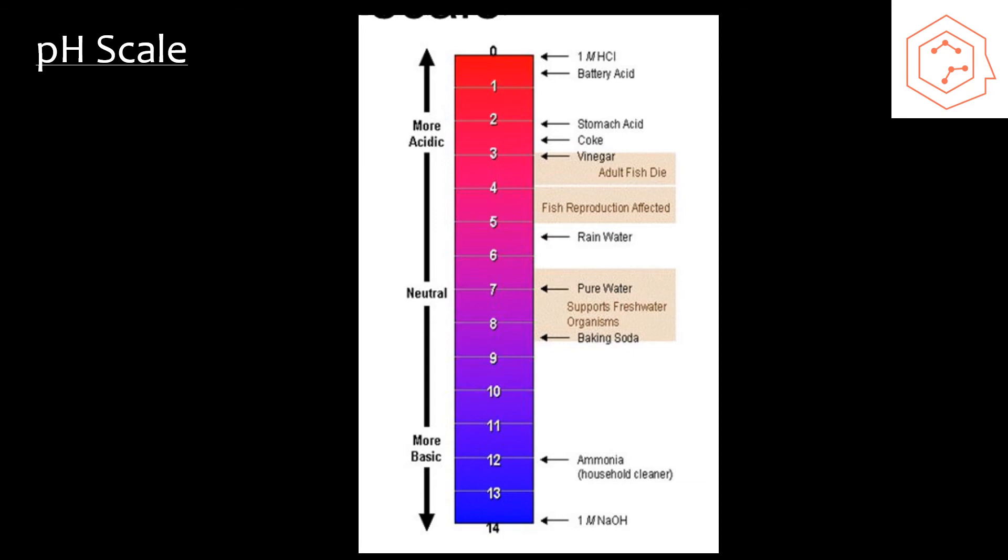A pH scale is a numerical scale that is used to classify solutions as either acidic, below seven, or basic, above seven, or neutral if it's around the seven range.